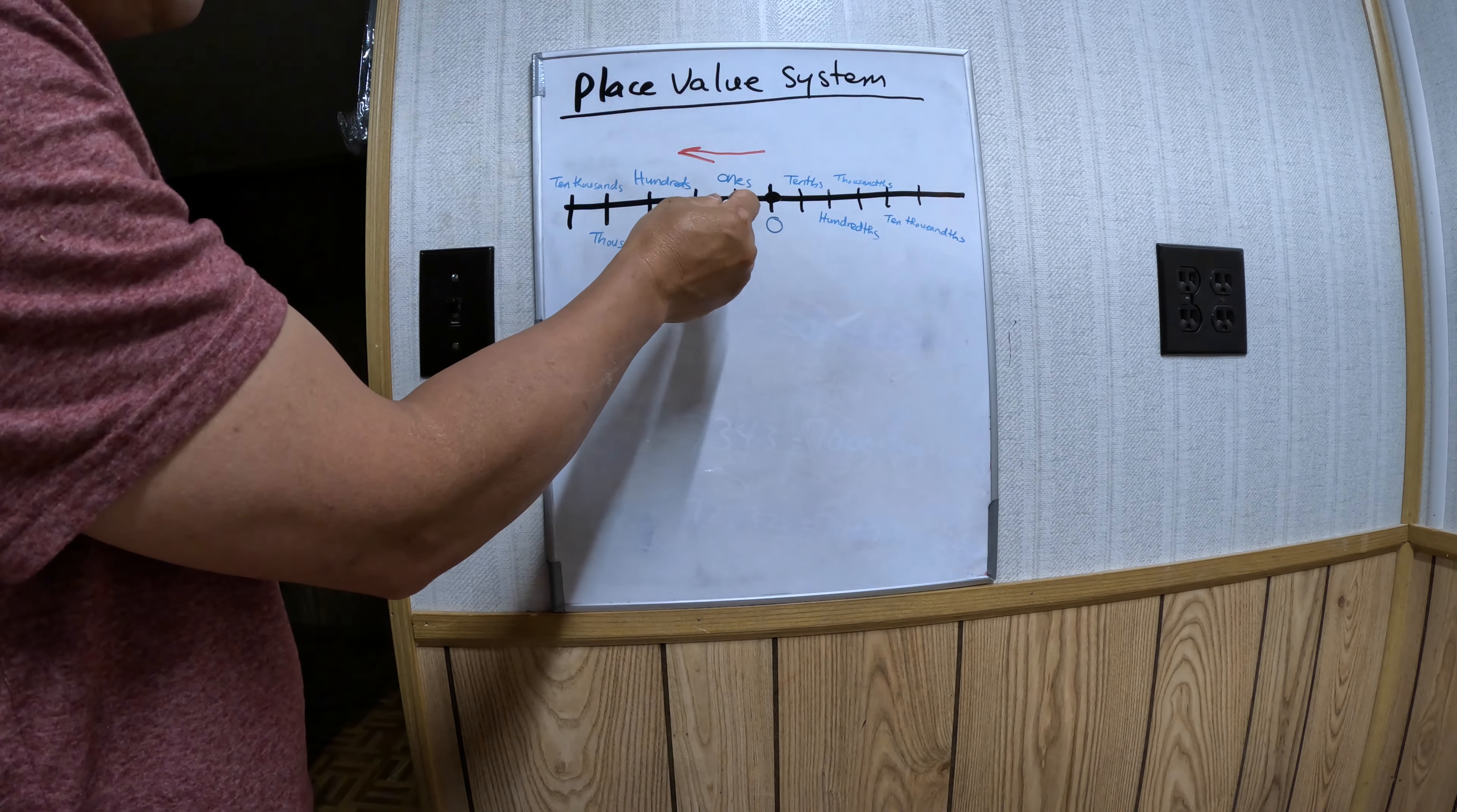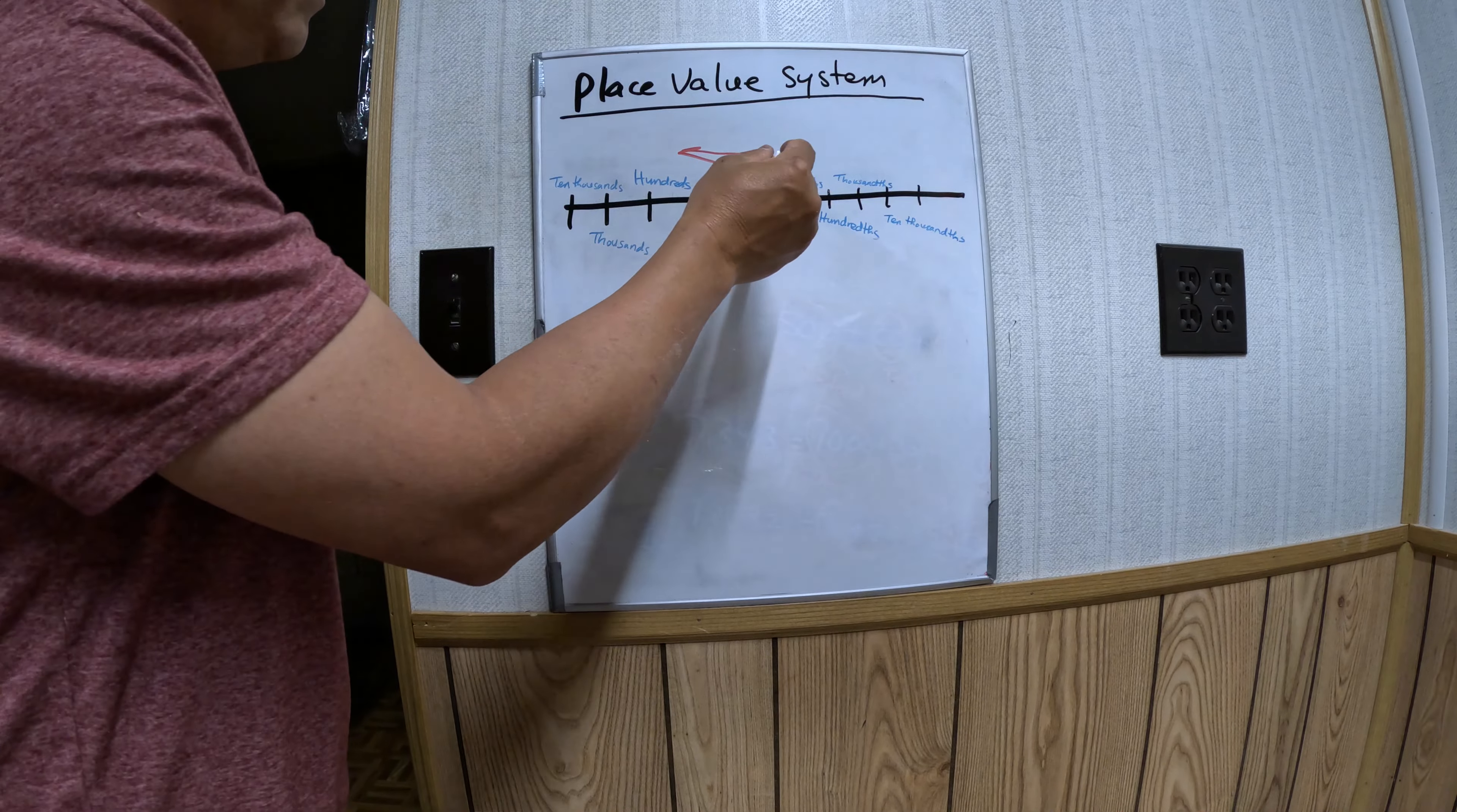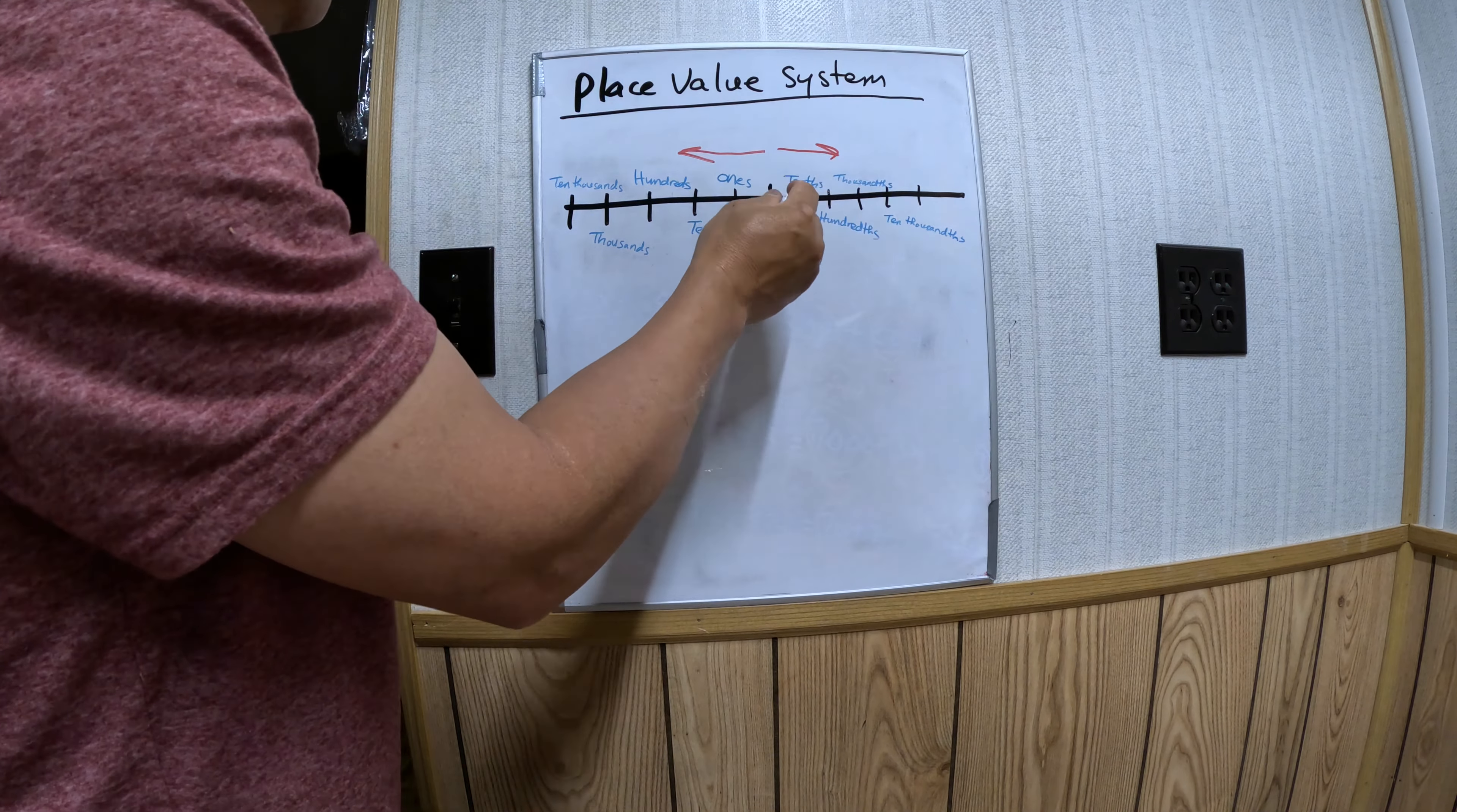One place over from the left of zero: ones, tens, hundreds, thousands, ten thousands. Going the other way to the right of zero, one place over to the right of zero is the tens place, hundreds place, thousands place, ten thousands place.